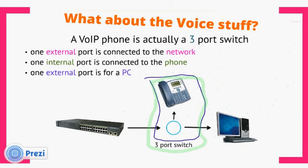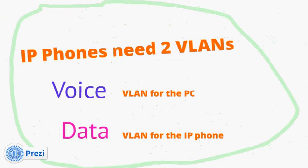What about the voice side? A Voice over IP phone is actually a 3-port switch: one external port connected to the network back to an Ethernet switch, one internal port connected to the phone for telephony, and one external port for a PC to hook up. IP phones need two VLANs: a data VLAN for the PC and a voice VLAN for the IP phone.